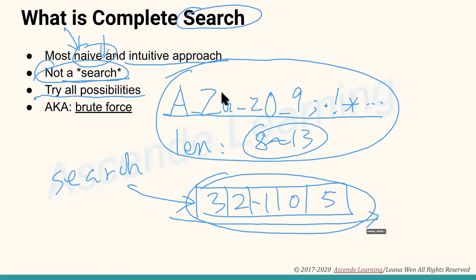Try all possibilities. So, for example, if I give you an array, this is an array of integers, I want you to solve a simple problem to tell me, does this array contain a number four?